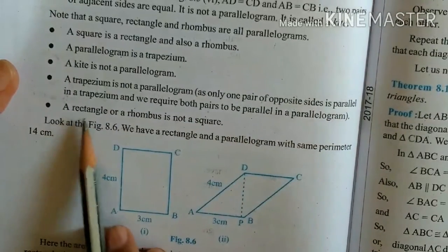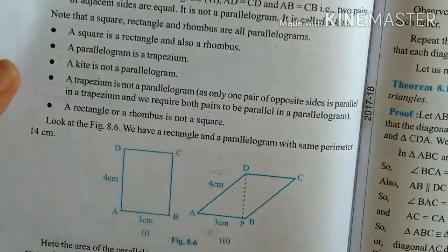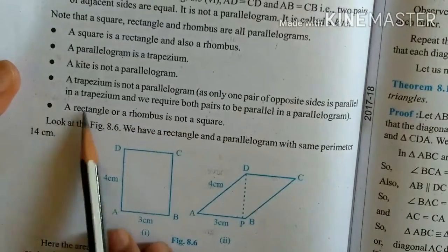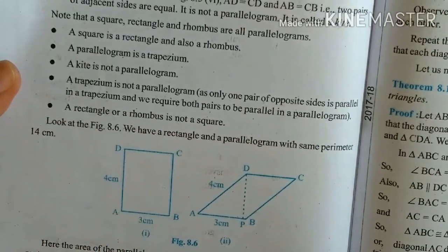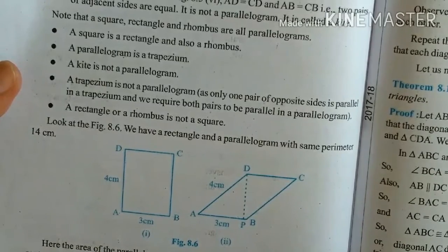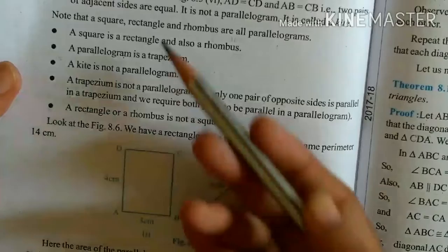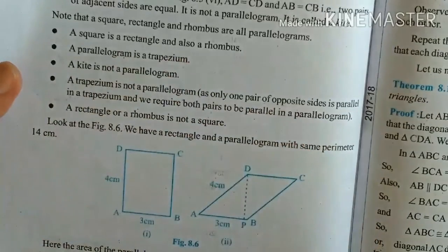A rectangle or a rhombus is not a square. We cannot call a rectangle or rhombus a square — we can call a square a rhombus or a rectangle, but a rectangle and rhombus cannot be called a square. So revise all this.